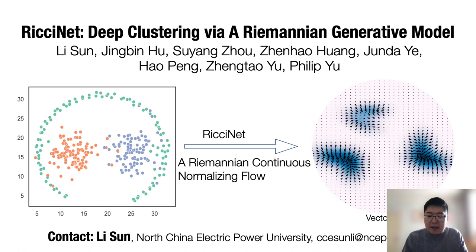Consequently, data points go along the shortest Ricci Flow path to complete clustering. Extensive empirical results show the superiority of our model.